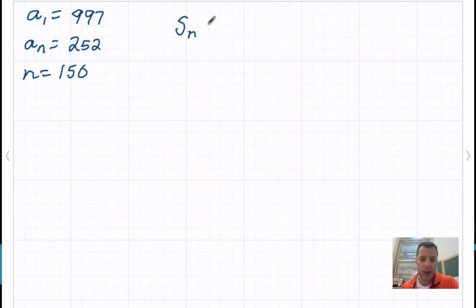The sum of that partial series, S sub n, is equal to 150 times the quantity 997 plus 252, divided by 2.